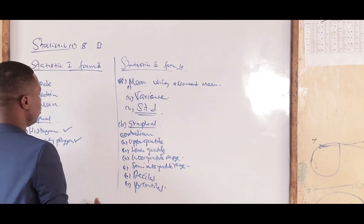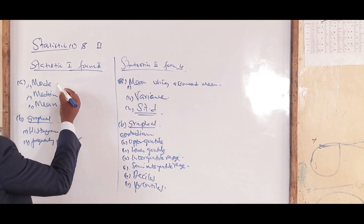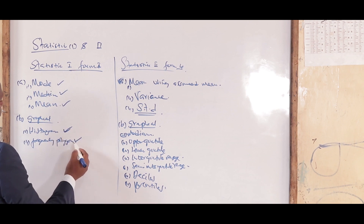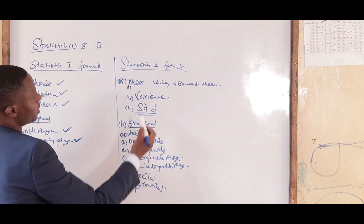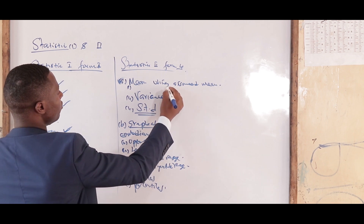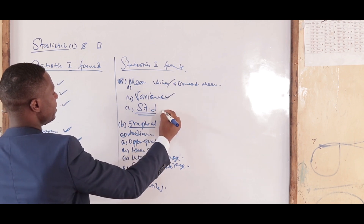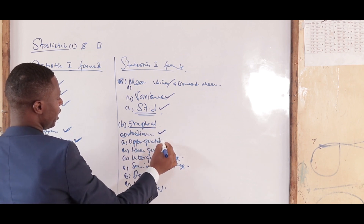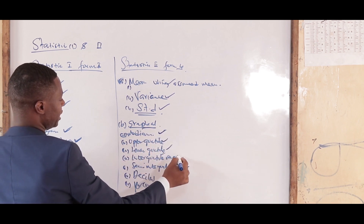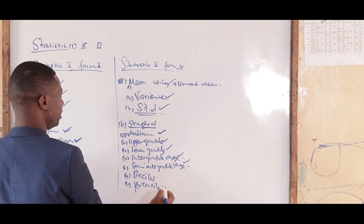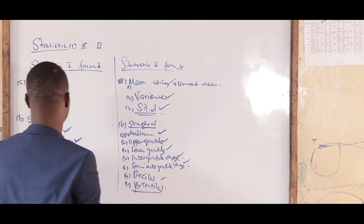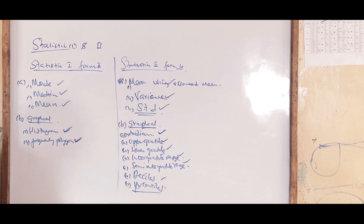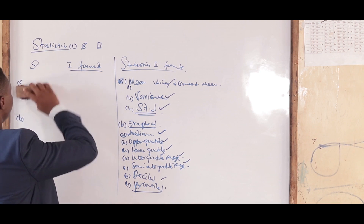So by the end of these two topics, you need to get mode, median, and mean; draw a histogram and frequency polygon; and from Statistics 2 find mean using assumed mean, variance, standard deviation, median, upper and lower quartiles, inter-quartile range, deciles, and percentiles. Let's start with Statistics 1 and work through a question.